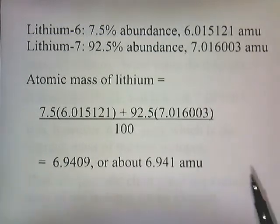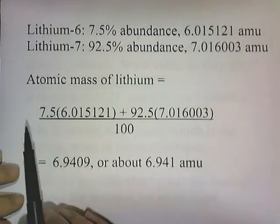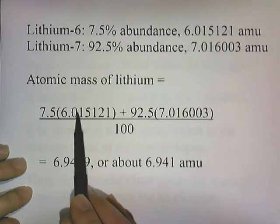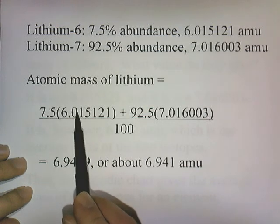To find the average mass of all these lithiums is solved the same way as figuring out the average height of the basketball players. You remember that we had the number of basketball players at a certain height. Here we have the number of lithium atoms at this mass.